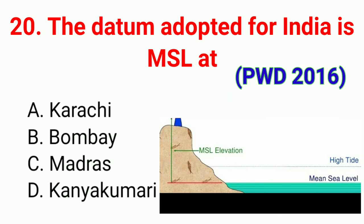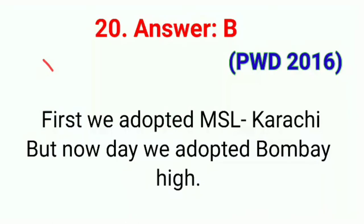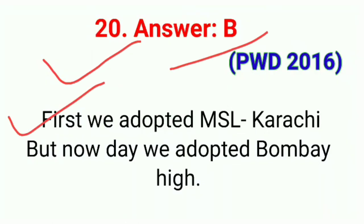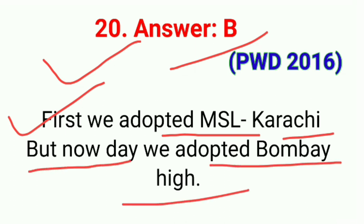Question number twenty: The datum adapted for India is mean sea level at. The correct answer is option B, Bombay. India first adopted mean sea level at Karachi, but nowadays the datum adopted is mean sea level at Bombay.